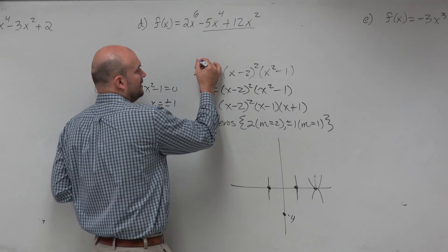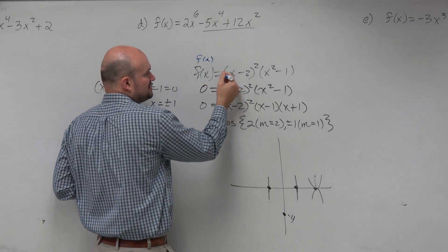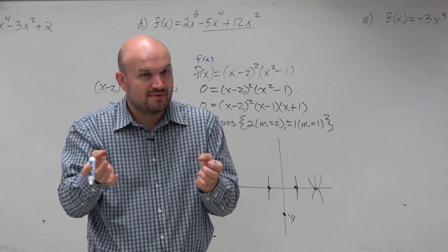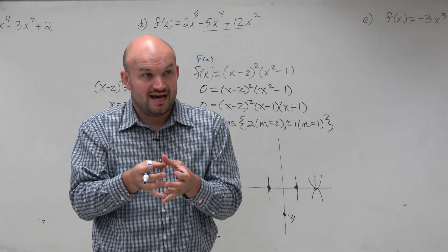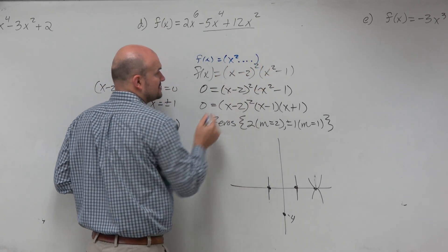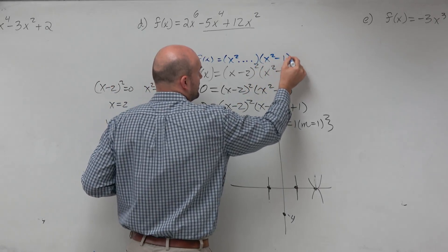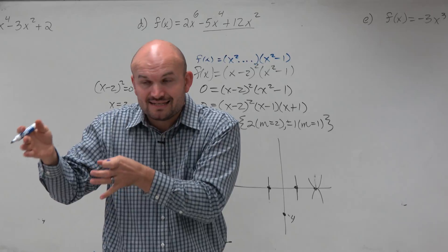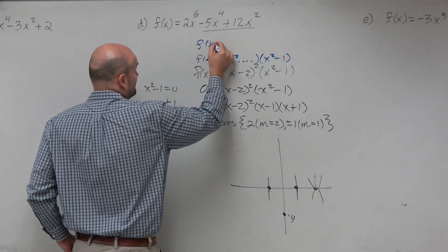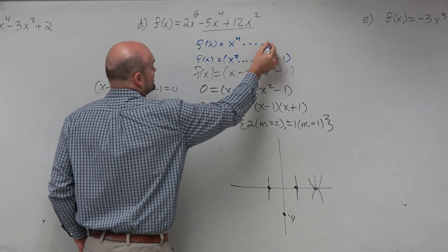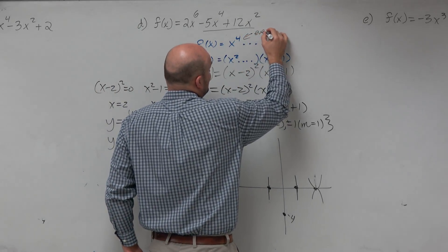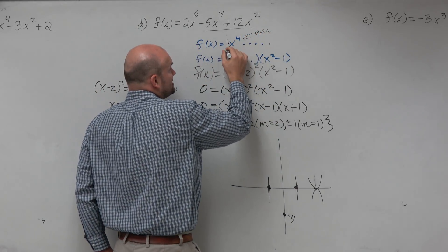All we want to do is figure out what is going to be that leading term. So if I was going to multiply this out, let's just pretend I was going to multiply x minus 2 squared. What would be the leading term of x minus 2 times x minus 2? x squared. I don't care what everything else is. And then I'd multiply that by x squared minus 1. If I was to multiply x squared dot dot dot times x squared minus 1, that leading term would be now x to the fourth.